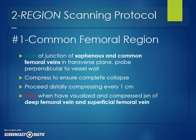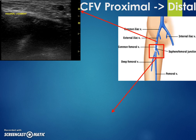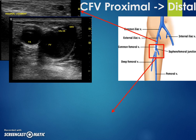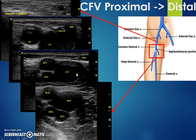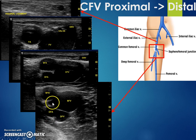Stop once you visualize the bifurcation into the deep femoral vein and superficial femoral vein, and once you've confirmed both compress distally, you can move on to the popliteal region. You'll see the inguinal ligament high up, then the common femoral artery and vein, and sometimes a valve at the junction of the greater saphenous vein entering the common femoral vein. Moving distally, the artery bifurcates first into superficial and deep, the saphenous moves more superficially away, and then the CFV bifurcates. Check that any perforating veins also compress at their junction.